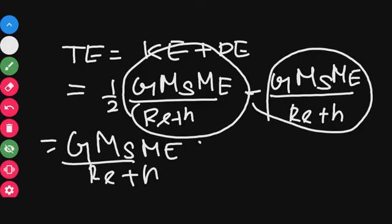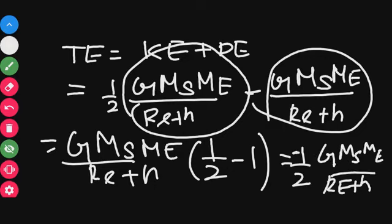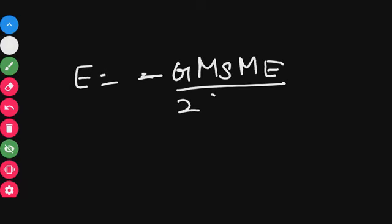Now combining: one half minus one gives minus one half. So total energy equals minus one half into GMs times Me divided by Re plus h, which is written as: total energy equals minus GMs times Me divided by 2 times Re plus h.